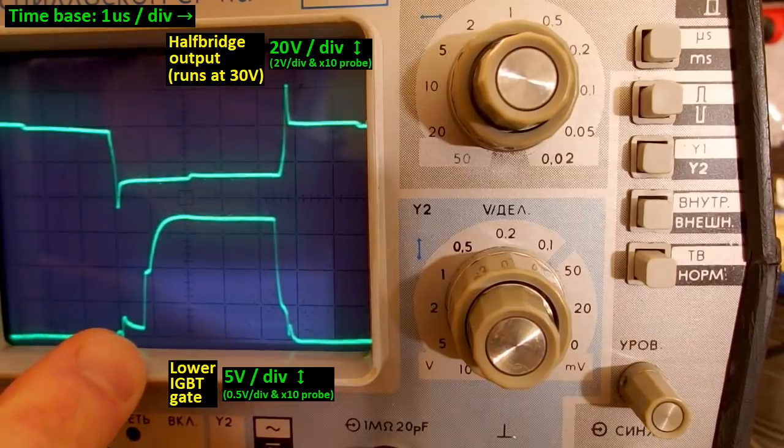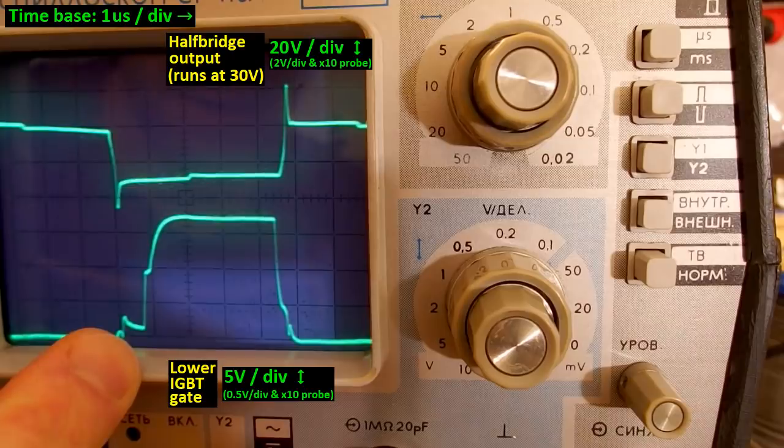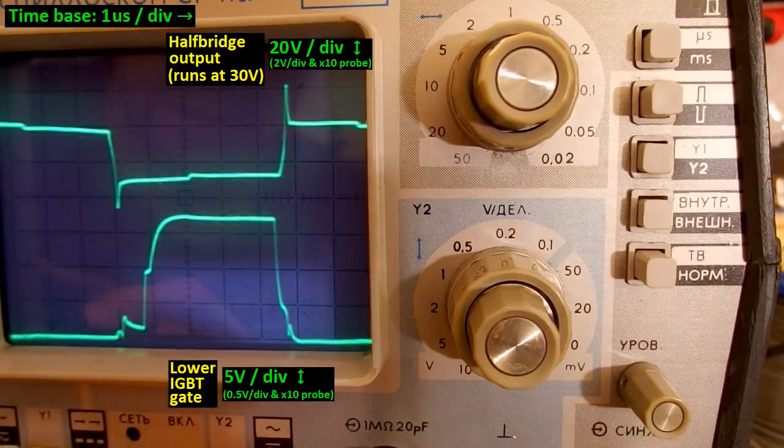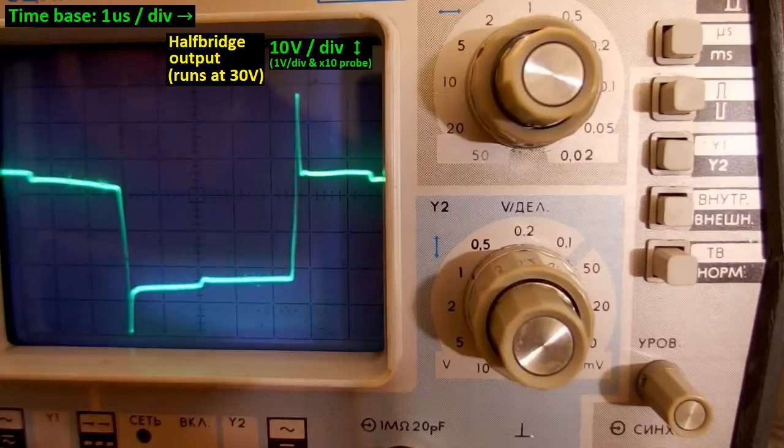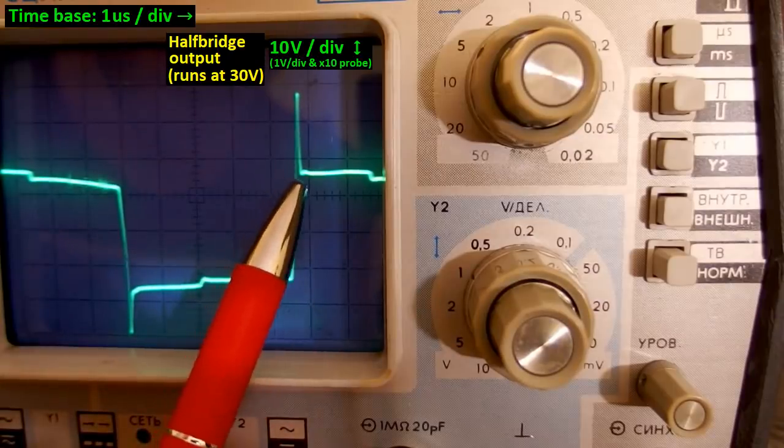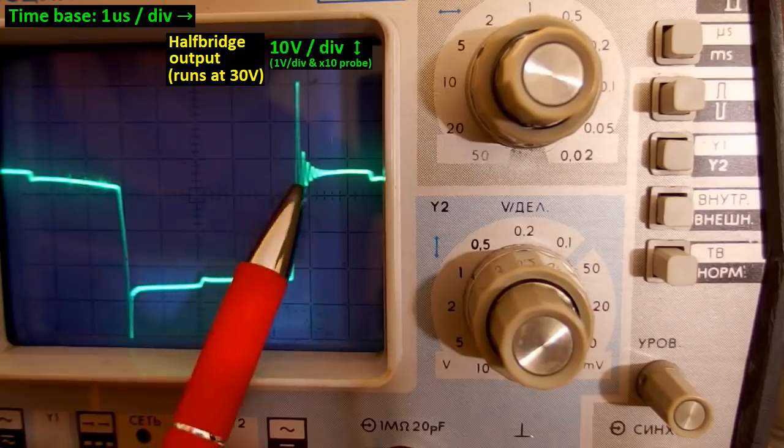And more capacitance in the snubber networks makes those overshoots smaller. And those overshoots also transfer into the gate of the transistor via the reverse transfer capacitance. And if I try to bypass the resistor in the snubber network, there is a ringing here.